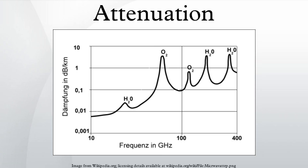Attenuation in fiber optics, also known as transmission loss, is the reduction in intensity of the light beam with respect to distance traveled through a transmission medium. Attenuation coefficients in fiber optics usually use units of decibels per kilometer through the medium due to the relatively high quality of transparency of modern optical transmission media. The medium is typically a fiber of silica glass that confines the incident light beam to the inside. Attenuation is an important factor limiting the transmission of a digital signal across large distances. Thus, much research has gone into both limiting the attenuation and maximizing the amplification of the optical signal. Empirical research has shown that attenuation in optical fiber is caused primarily by both scattering and absorption.